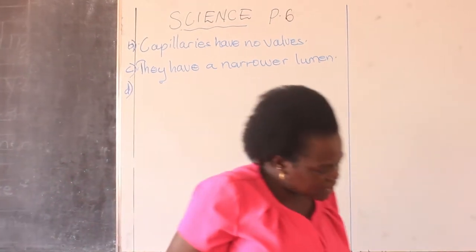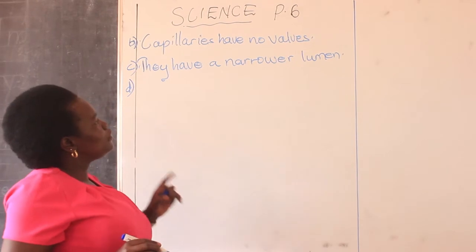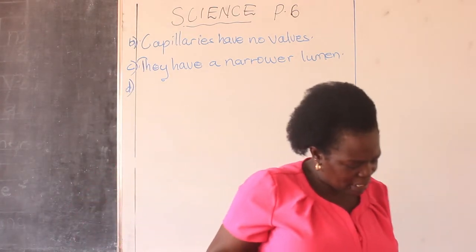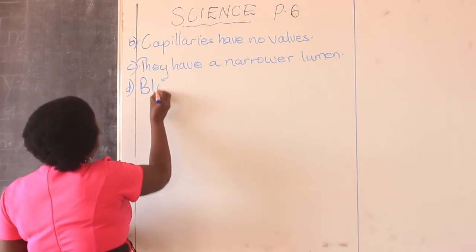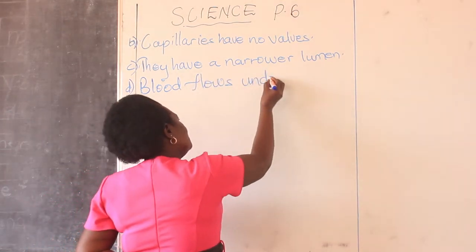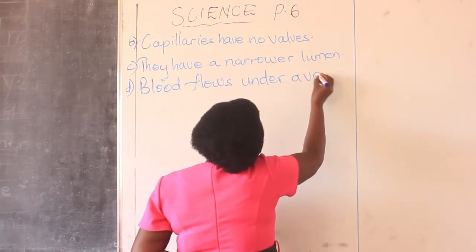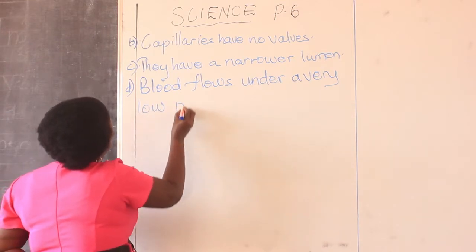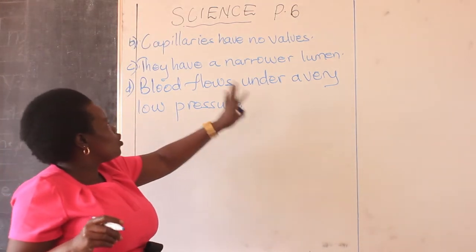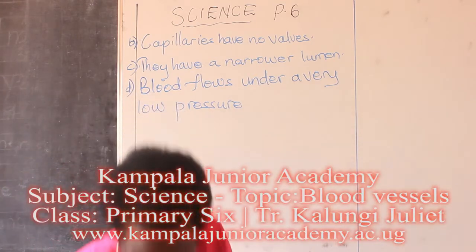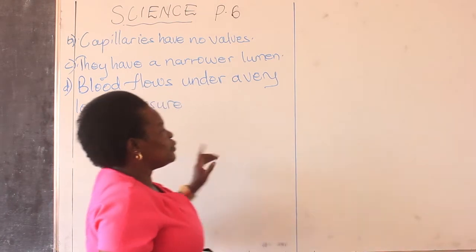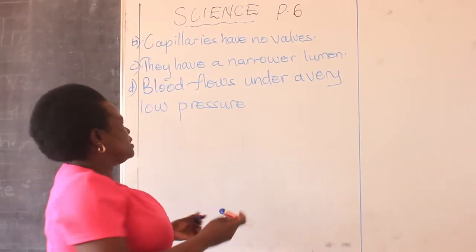Another characteristic: the blood flows through capillaries under very low pressure. Blood flows under very low pressure — compared to the high pressure in arteries and the low pressure in veins. Here we say 'very low,' which is actually different from the other blood vessels.